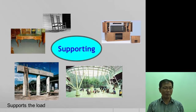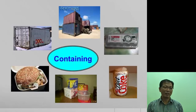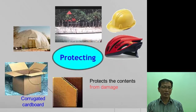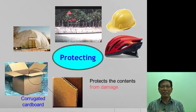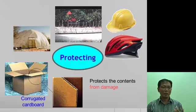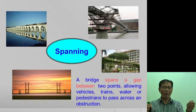Containers include things like Coca-Cola containers, styrofoam containers, and oil drums that contain things. Protection includes helmets and corrugated boxes, which protect internal contents from being damaged from the outside.